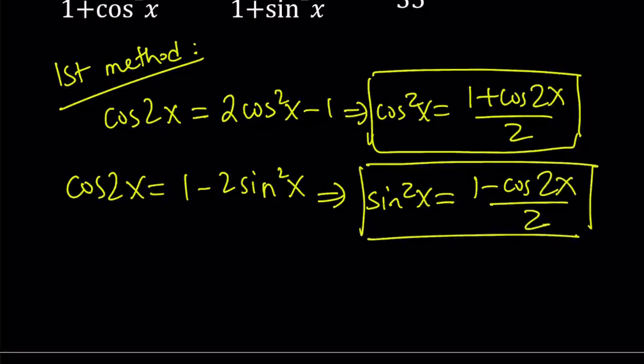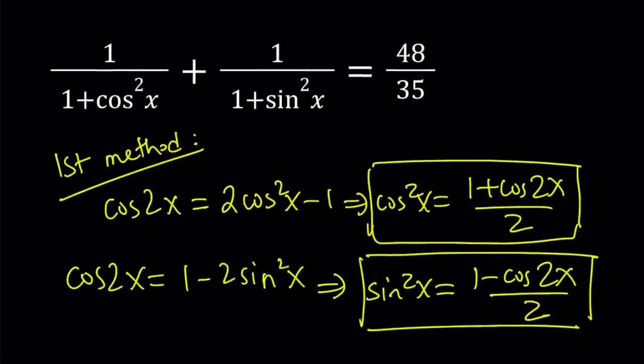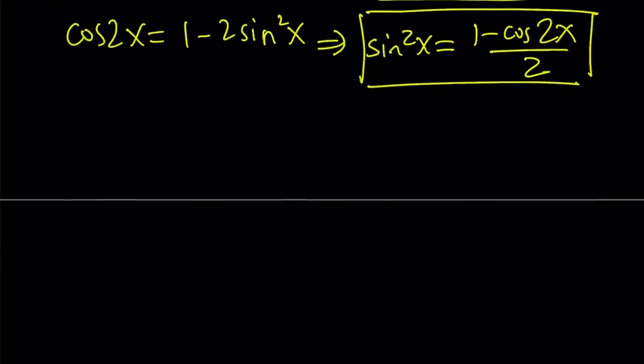Great. So let's go ahead and substitute these into the equations and we're going to simplify the fraction on the left hand side and we're going to be solving for cosine of 2x. So that's the plan. Alright, let's see how this plays out.